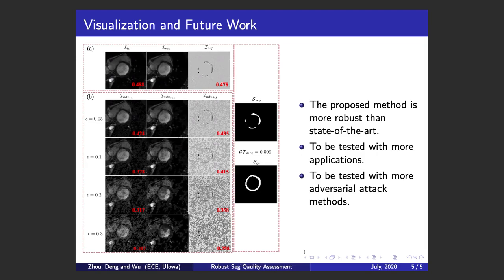Here is a sample visualization. The reference image shows the segmentation to be assessed alongside the ground-truth segmentation, from which the ground-truth dice is approximately 0.5. The numbers on the other images indicate the predicted dice using each method. When there is no attack, our difference image method and the current state-of-the-art perform similarly. But as attack intensity increases, the current method's prediction accuracy decreases faster than our method.